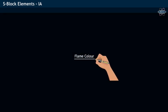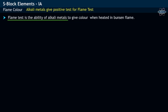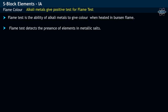Why does alkali metals give flame color or flame test when heated in a Bunsen flame? Alkali metals give positive result to the flame test. Flame test is the ability of metal species to give color when heated in Bunsen flame. This flame test is generally used to detect the presence of particular element in metallic salts.